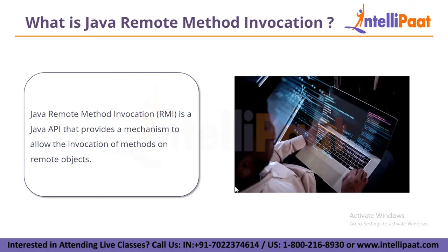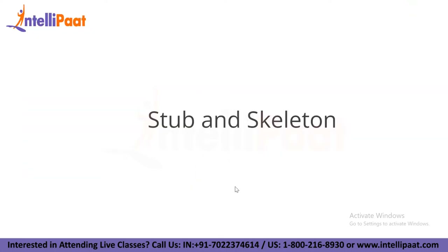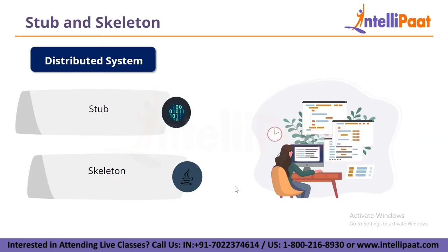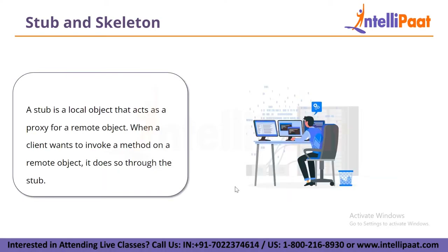Now let's move forward and discuss stub and skeleton. In the context of Java remote method invocation, stubs and skeletons are two important components that facilitate the communication between client and server in a distributed system. A stub is the local object that acts as a proxy for a remote object. When the client wants to invoke a method on a remote object, it does so through the stub, which in turn communicates with the remote object to perform the requested operation.